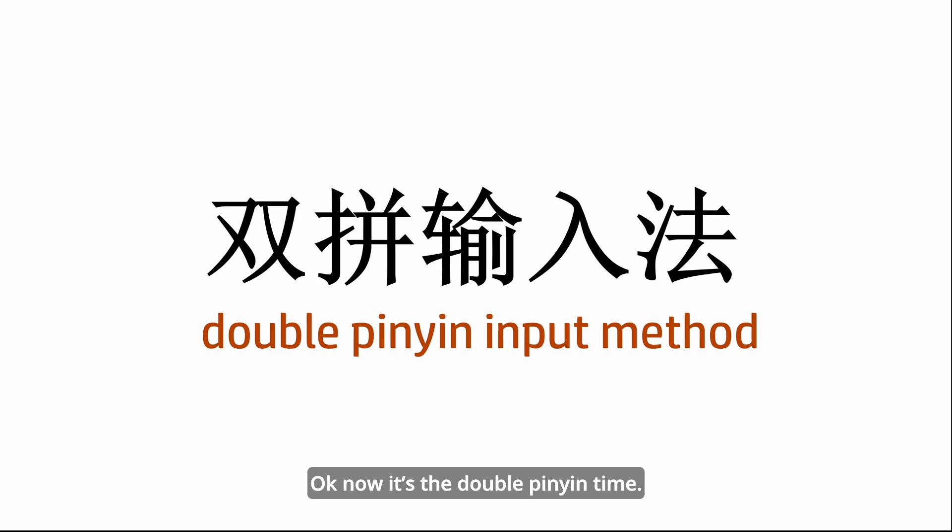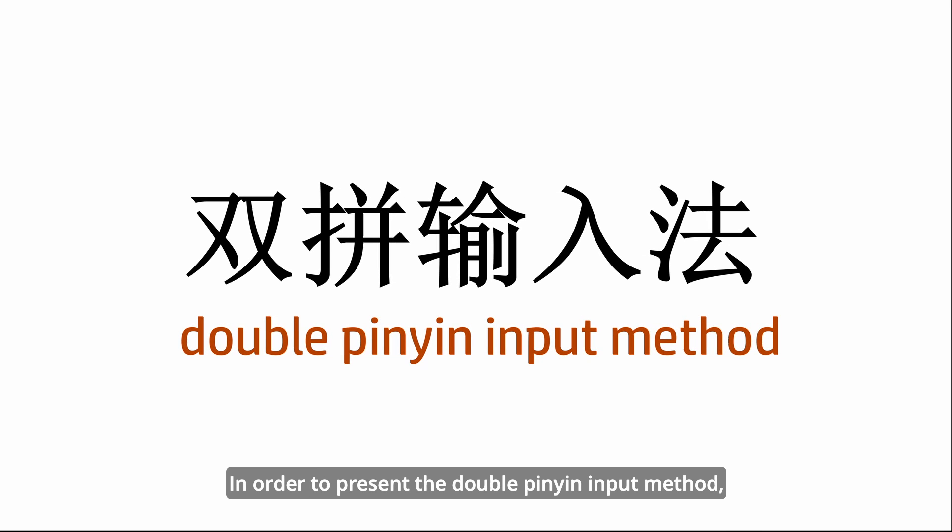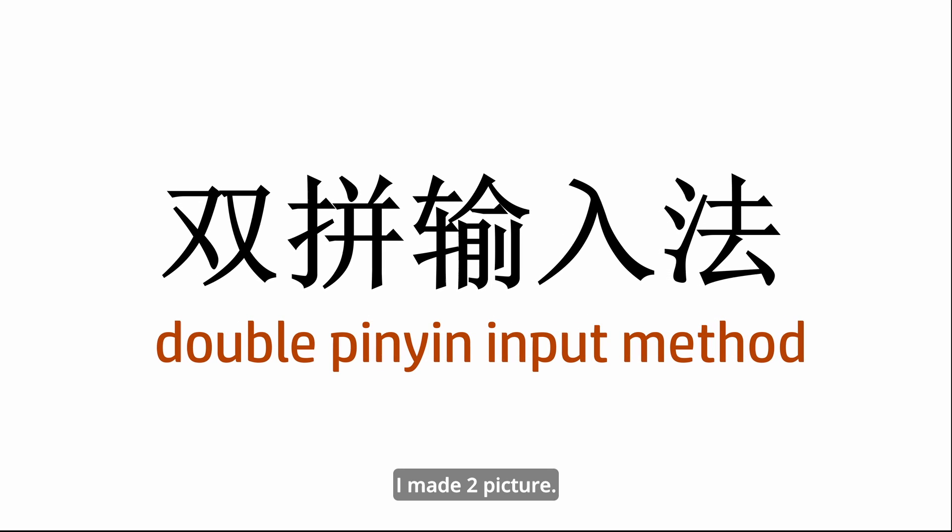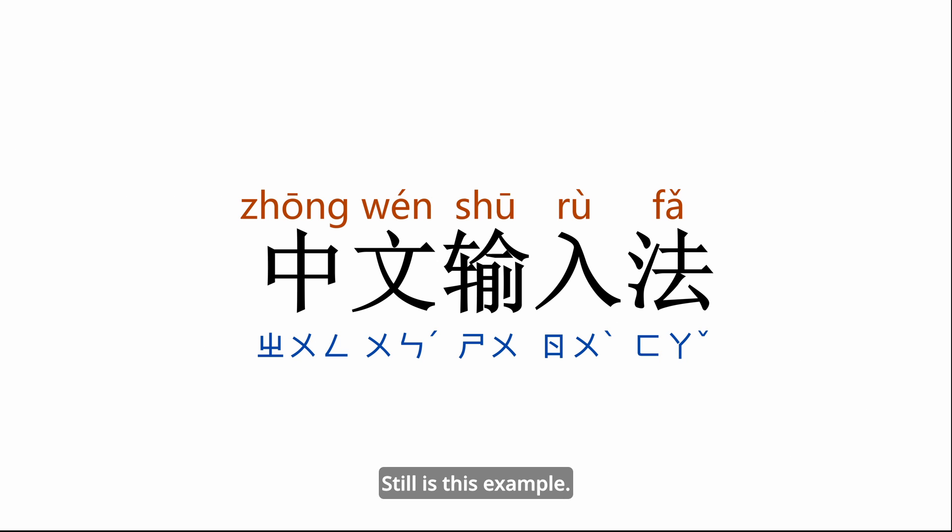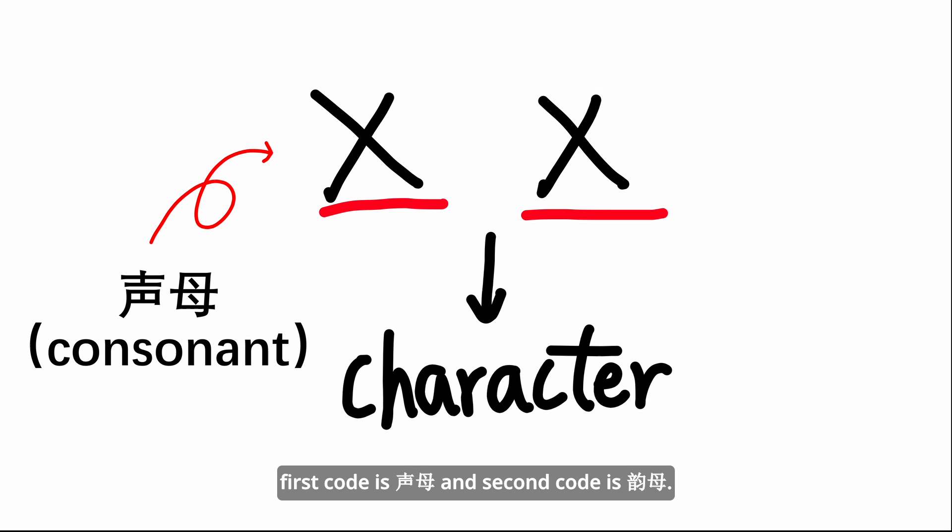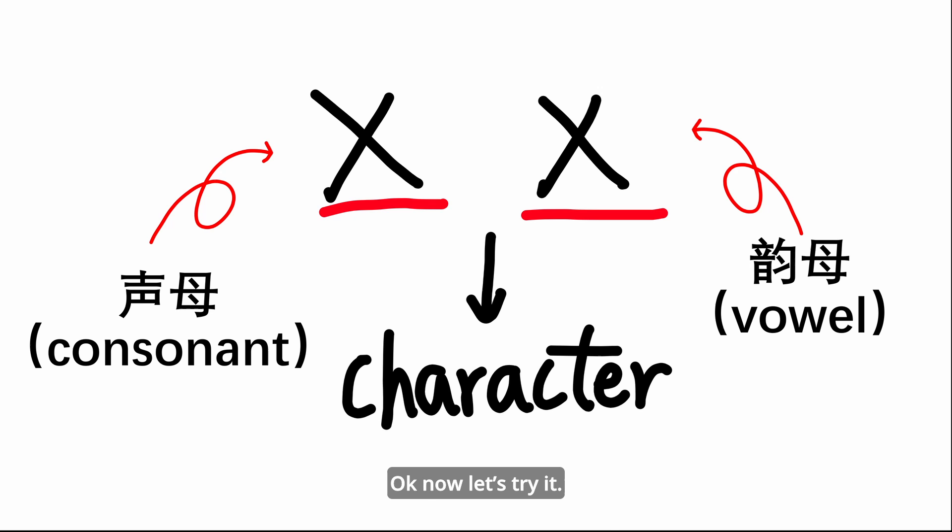Okay, now here's the double pinyin type. In order to present the double pinyin input method, I made two pictures. We can try to type characters with double pinyin. Still the same example. We must remember the input rule: first the code is shengmu and the second code is yunmu. Okay, now let's try it.